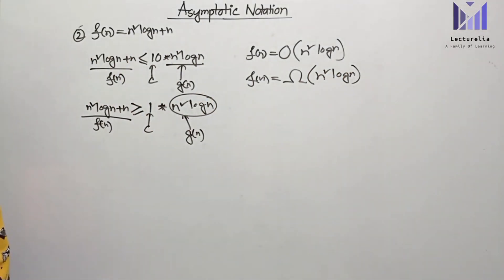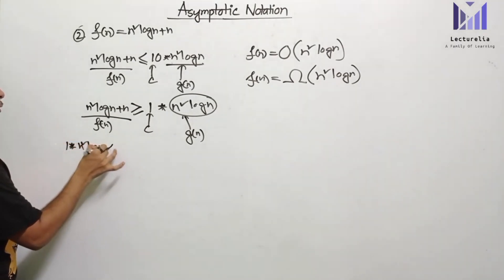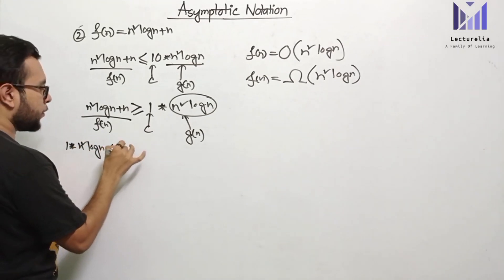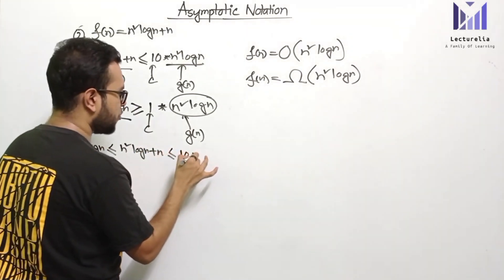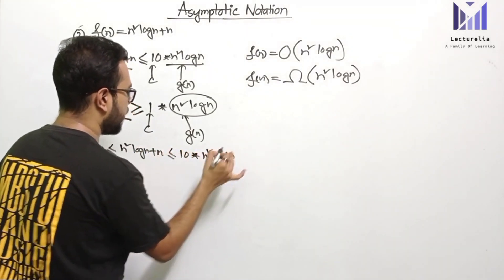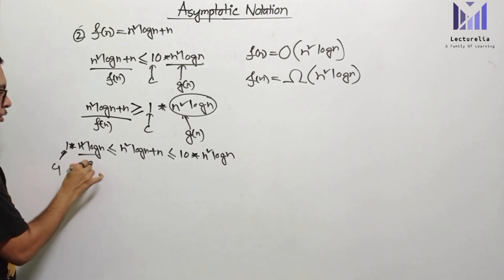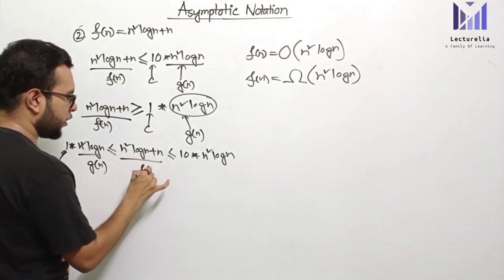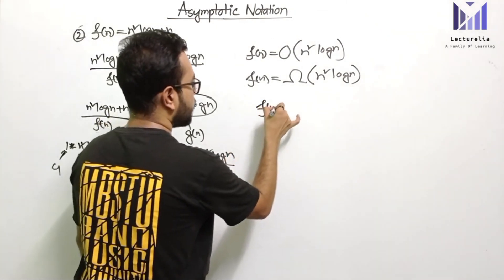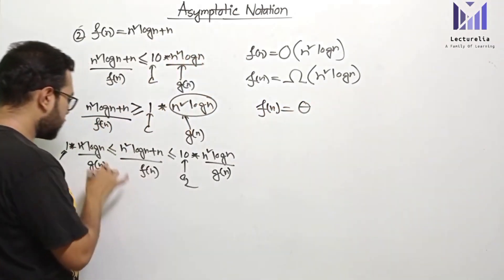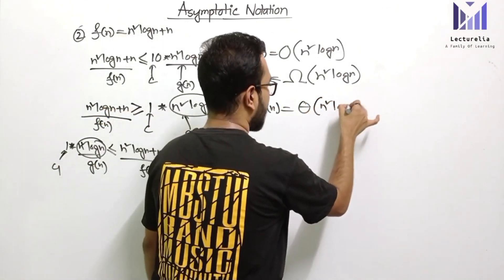If we want to represent using Theta notation: 1 into n² log n is less than or equal to n² log n + n, which is less than or equal to some constant into n² log n. Therefore f(n) is equal to Theta of g(n), where g(n) is n² log n.